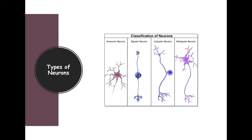Interneurons are specialized in taking the stimuli or the sensory information and integrating what that stimulus represents. That helps the motor nerves figure out what types of signals need to be sent to the effector organs. Something unique about the bipolar neuron: these neurons are generally found in the extra-special sensory areas like vision, smell, and taste. All the sensory portions of the brain have a lot of these bipolar neurons.